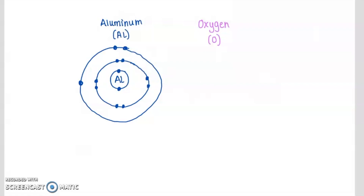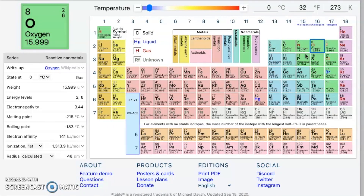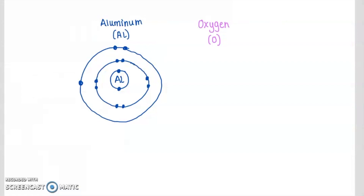I'm going to draw a Bohr model for oxygen as well. Back on the periodic table, I found oxygen. Oxygen has an atomic number of 8, meaning it has 8 protons. In a neutral oxygen atom, that means it would also have 8 electrons. I'm noticing that oxygen is in group 16, or main group 6, meaning that I would expect oxygen to have 6 valence electrons.